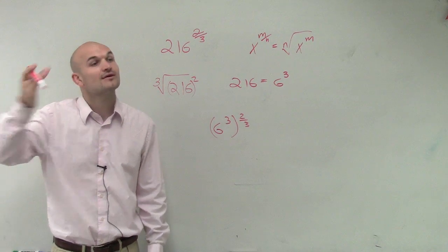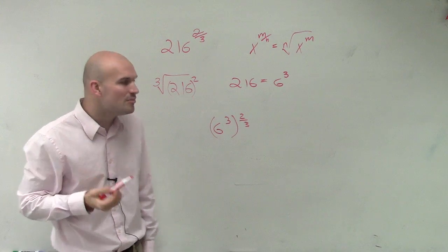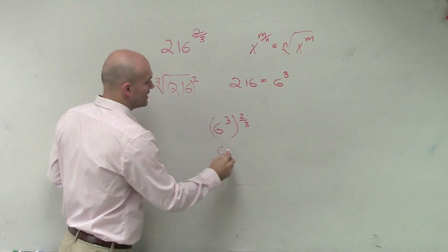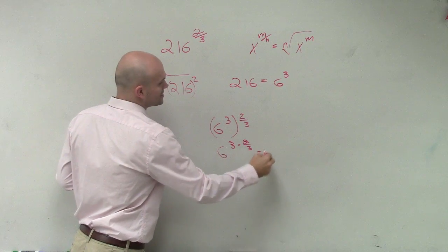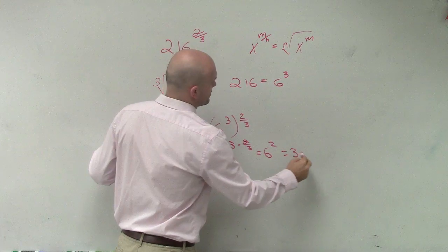Nobody remembers. Oh, yes, Alex. Yes, what was that again? You multiplied the exponents. You multiplied the exponents. So you get 6 to the 3 times 2 thirds, which equals 6 squared, which equals 36.